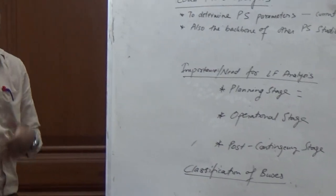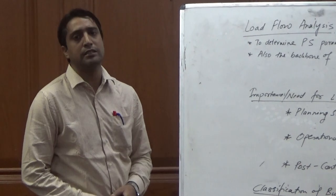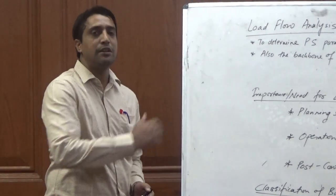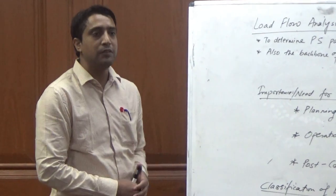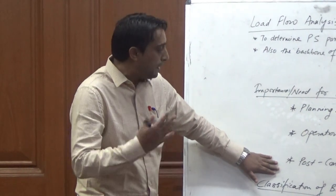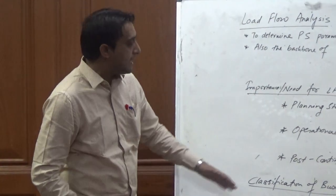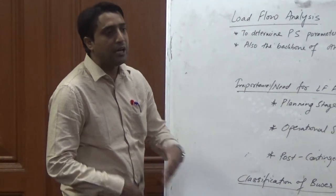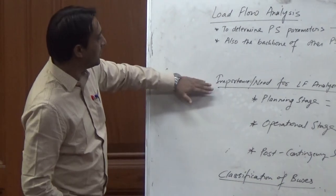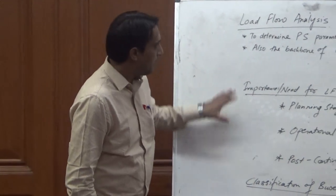In the post-contingency stage, if the system develops a contingency such as a particular transmission line outage or some generator is removed from service, then how that affects the operating point can be determined from the load flow analysis. This allows us to assess how the system would behave in the event of a particular contingency. Post-contingency analysis can be achieved through the use of load flow algorithms.